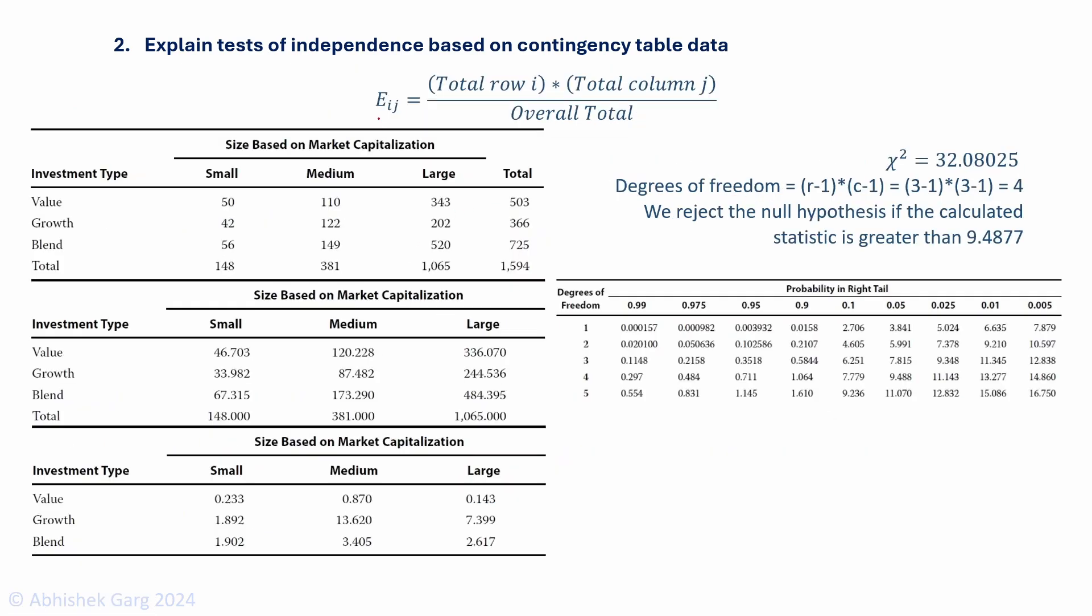How to calculate the expected value? The expected value for each cell is total of row i times the total of column j divided by the overall total. It will be much more clear from this example. We are given data of different ETFs. It represents the size and investment style.